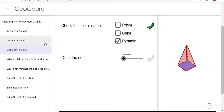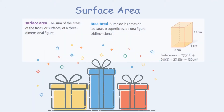Let's continue by finding the surface area of these shapes. The surface area is the sum of all areas of the faces or surfaces of a three-dimensional figure — remember that sum means to add. Reflecting back to the wrapping paper question, the amount of wrapping paper needed to cover a gift would be the surface area.